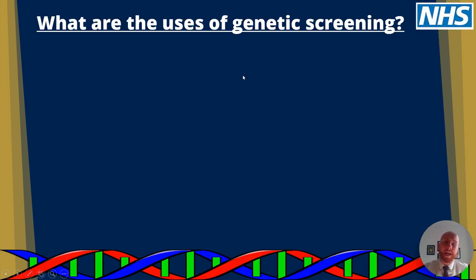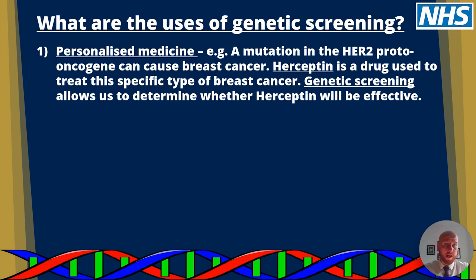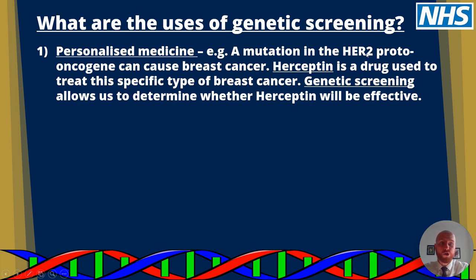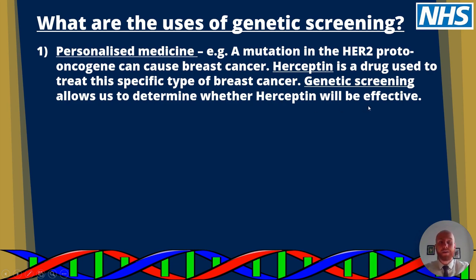What are the uses of genetic screening? Firstly, genetic screening — looking at a patient's DNA for things like mutated alleles — can be used in personalised medicine. For example, a mutation in the HER2 proto-oncogene can cause breast cancer. Herceptin is a drug used to treat that specific type of breast cancer, and genetic screening allows us to determine whether Herceptin will be effective. So doctors can decide, based on a patient's genetics, whether a certain drug will work for them, which is revolutionary.